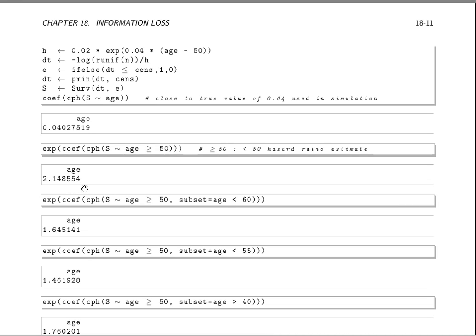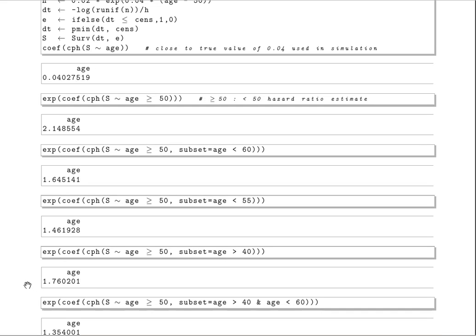Now, what if we took away those subjects with age greater than 60? Well, the hazard ratio for high to low age goes down to 1.6. What if we took away those subjects with age greater than or equal to 55? Well, the hazard ratio goes down again to 1.46.